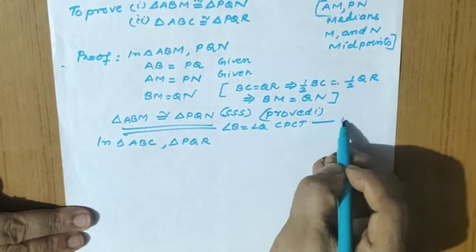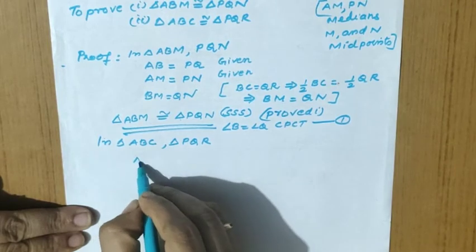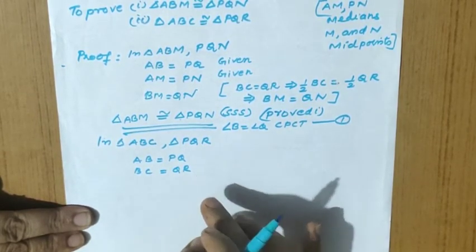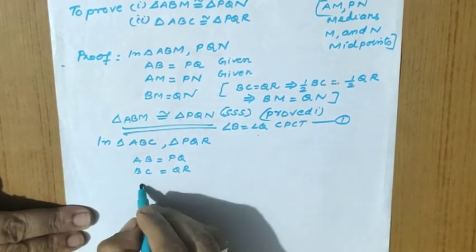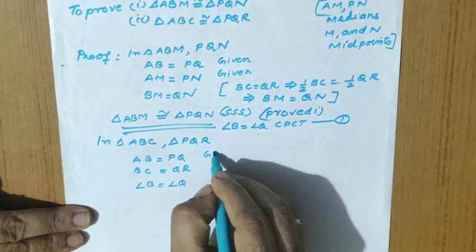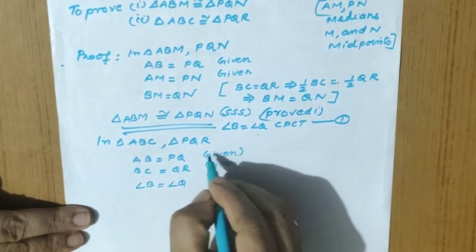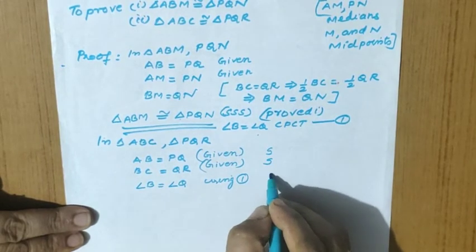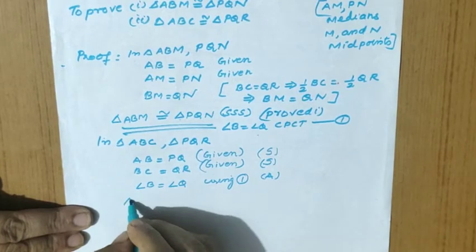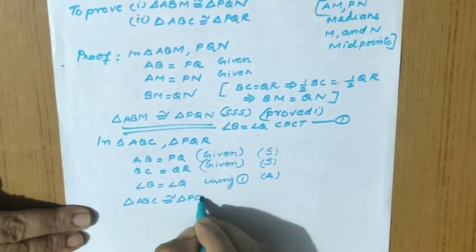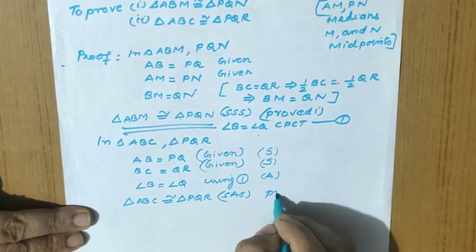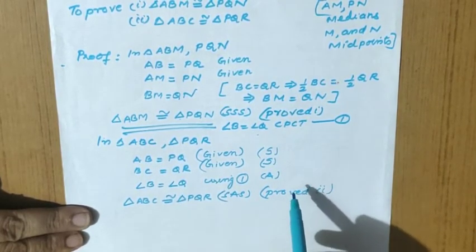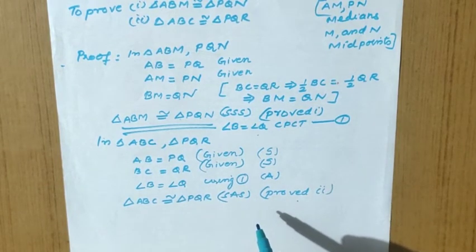In triangle ABC and triangle PQR: AB equal to PQ and BC equal to QR — two sides. We need the included angle, which we get from CPCT: angle B equal to angle Q. So by SAS criteria, triangle ABC is congruent to triangle PQR. Second part proved. Two different criteria were used: SSS for the first and SAS for the second.